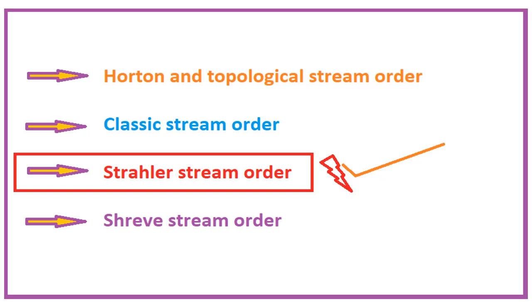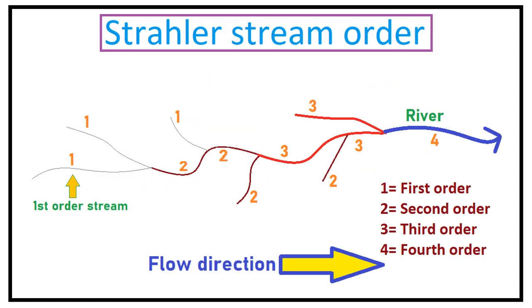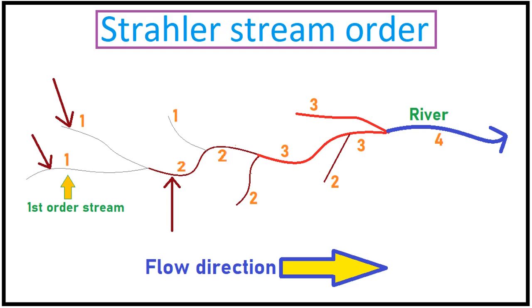This image can help us with that. We can see four orders of streams here. Essentially, the source generates the first order stream. As we can see in the image, the initiation of the stream begins with the first order.